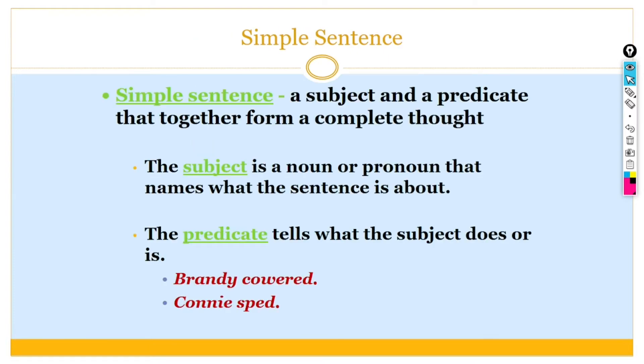So, simple sentence, in this example, you can say, subject and predicate, that together form a complete thought. The subject is a noun, pronoun, name, what the sentence is about. The predicate tells us what the subject does, or is. So, friendly, covered, candy, speech.